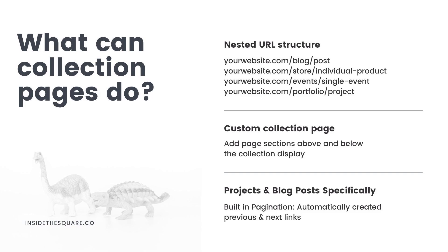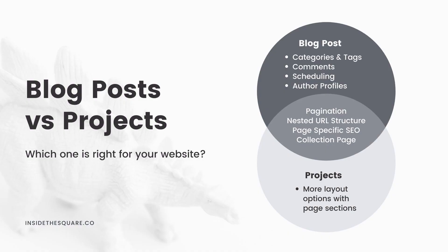When we hop into my demo site I'll show you how to do that — it's super easy and makes it really customizable on that collection page. Both blogs and projects are unique collection pages because they have built-in pagination that's automatically created — previous and next links to help people navigate through additional content inside that collection. Now there are also some key differences between blogs and portfolios, and that's probably why you're watching this video.